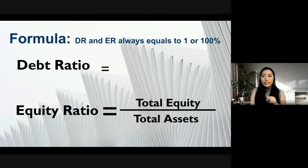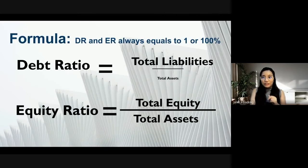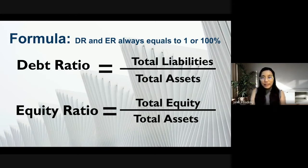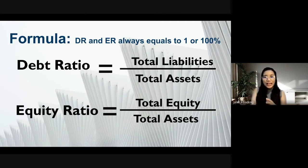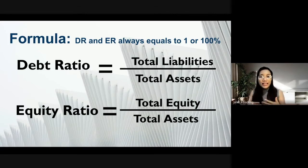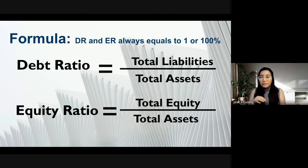For the debt ratio, we simply divide total liabilities by total assets. For the equity ratio, we divide total equity by total assets. If you have a financial statement — particularly the balance sheet — just look at the liabilities, assets, and equity portion, which is normally at the bottom part.